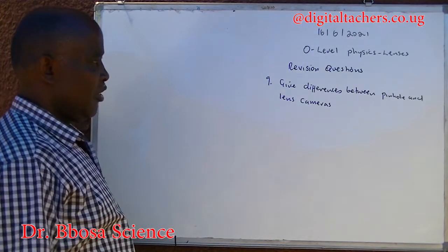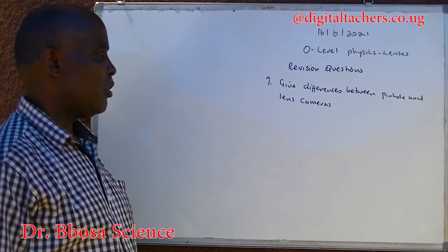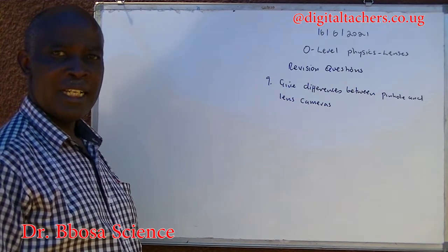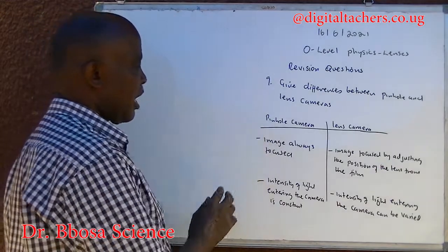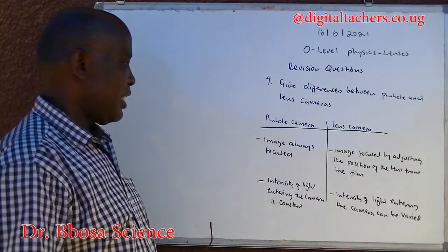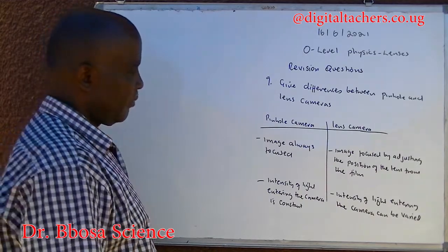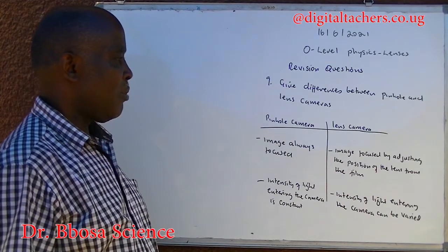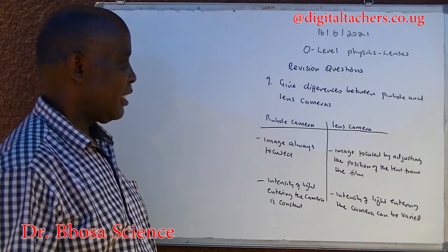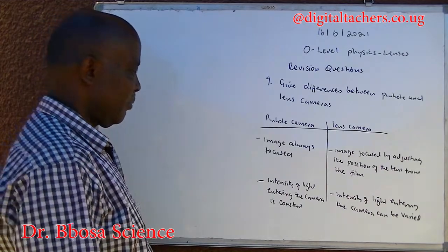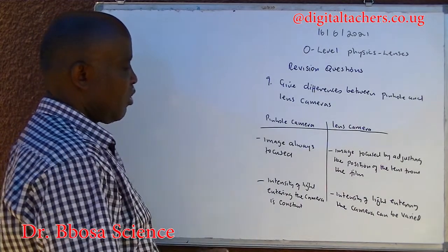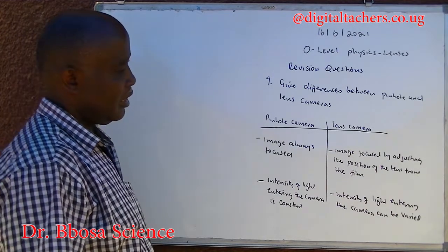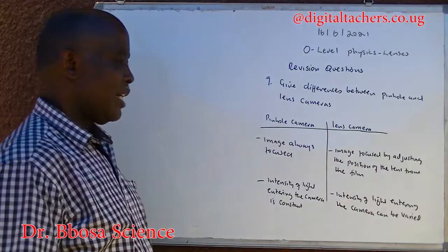Number nine: give differences between pinhole and lens cameras. You can pause and answer. In a pinhole camera, the image is always focused. In a lens camera, the image may be focused by adjusting the position of the lens from the film. In a pinhole camera, the amount of light entering the camera is constant. In a lens camera, the amount of light entering the camera can be varied by adjusting the diaphragm.